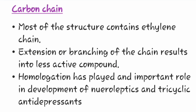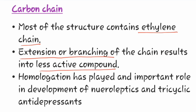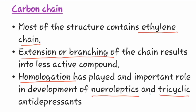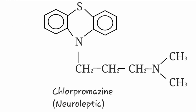Most structures contain an ethylene chain. Extension or branching of the chain results in a less active compound. Homologation has played an important role in the development of neuroleptics and tricyclic antidepressants. The classic example of this is chlorpromazine, which is a neuroleptic.